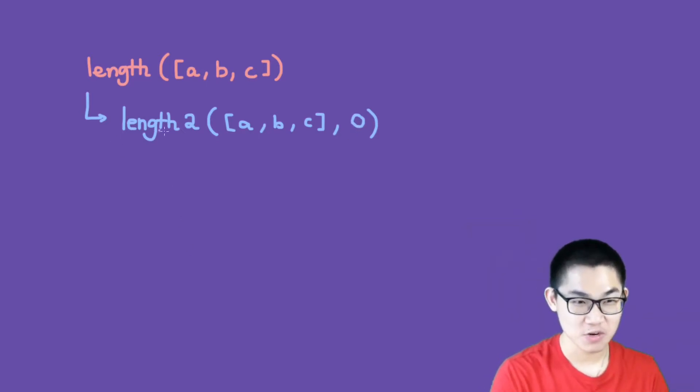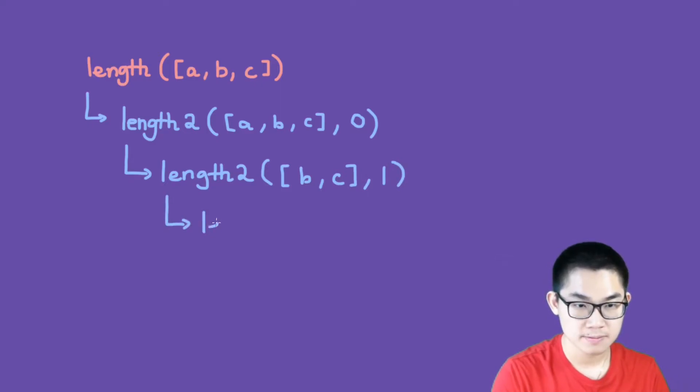Now, this function will call on itself again. So we have length 2. And this time, we move on to the next element in the array. So in the list, we only have B and C. And since we moved on one element, this number gets incremented, and this becomes 1. And then this calls on itself again. We move on to the next element, which is C. And so because we move on to the next element, we increment this number, and this becomes 2.